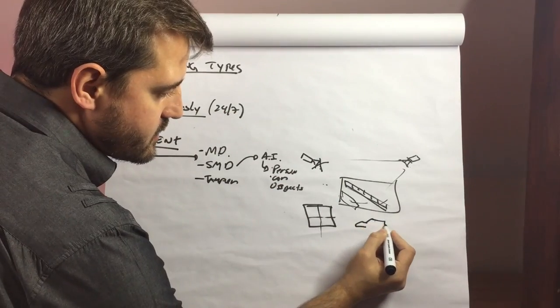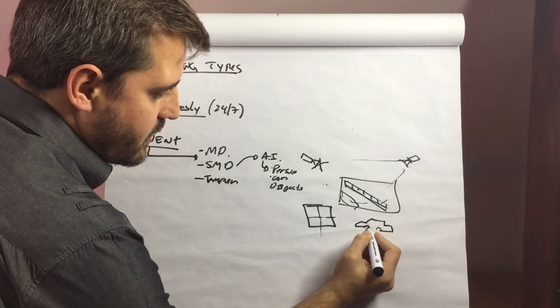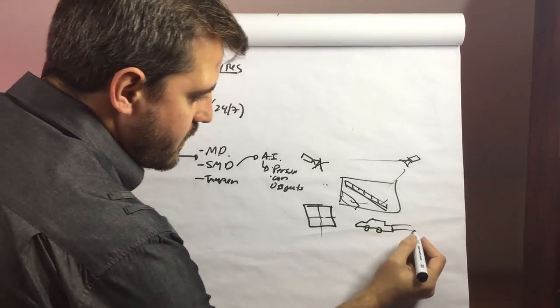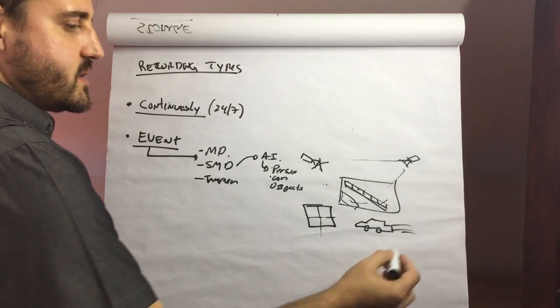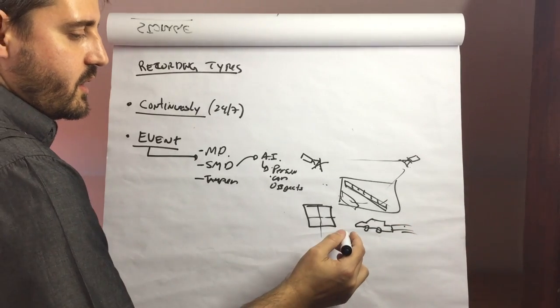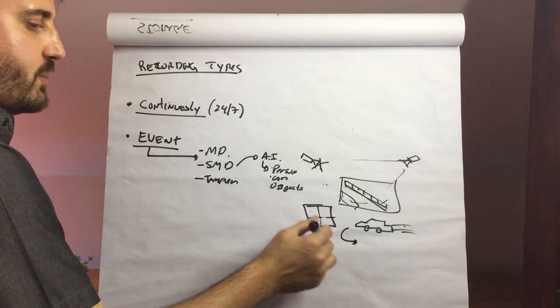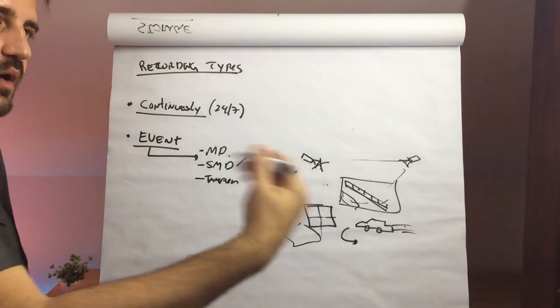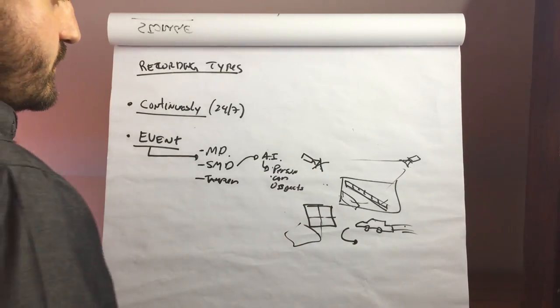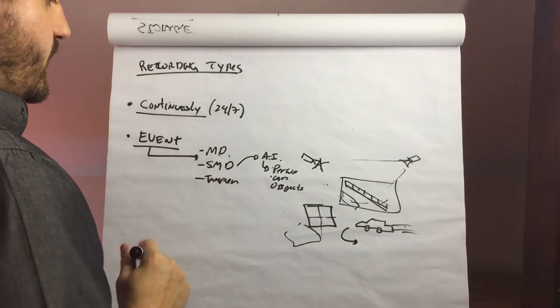Cars. Let's try to draw here a car. So we can have like a speed detection, an illegal U-turn, an illegal parking. We have different type of events related to cars as well that can be triggering a recording.